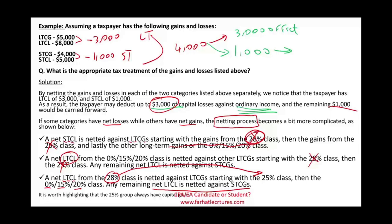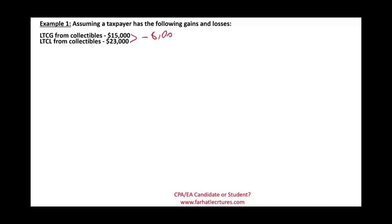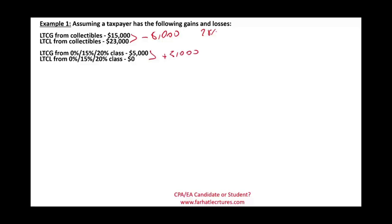The best way to illustrate this is with an example. Long-term capital gain from collectibles: $15,000. Long-term capital loss from collectibles: $23,000. Overall, we have a loss of $8,000 in the 28% category. Long-term capital gain for the 0/15/20% category: $5,000, long-term capital loss: $0, so we have a plus $5,000 gain here. Short-term capital gain: $12,000, short-term capital loss: $2,000 — overall a gain of $11,000.